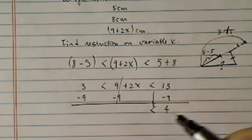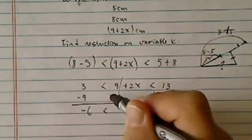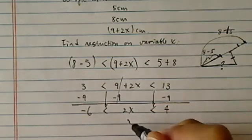So this one copies down here, I have a 4 here, and this one is minus 6, and I have a 2x here.